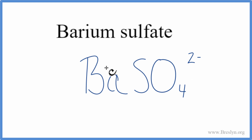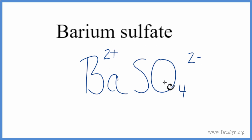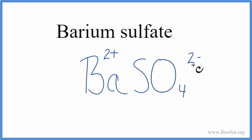When we go to the periodic table, we can see barium in group 2 has a 2+ ionic charge. So these charges, for a neutral compound — barium sulfate is neutral — need to add up to 0. We say they have a net charge of 0. 2+ and 2- adds up to 0.